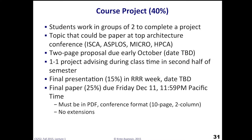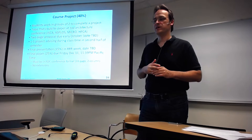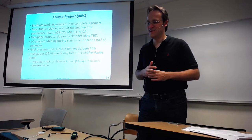The final presentation will be in RRR week — sometime in there we'll do final presentations and the whole class should attend. The final paper will be due towards the end of that period. It should be PDF format, conference format — up to 10 pages, two-column, looking like a regular conference paper. There are absolutely no extensions — if you don't get it done you'll have to take an incomplete, because we have to turn grades in right after.